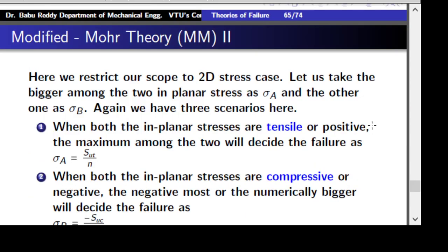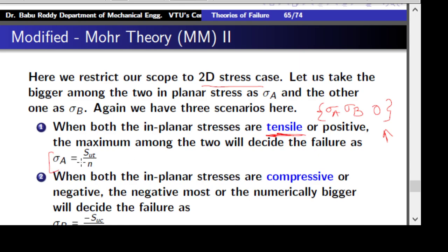In modified Mohr theory, we restrict our attention to the 2D stress case. When we find the principal stresses, let sigma_A and sigma_B be the two calculated stresses, and 0 is also present. Let sigma_A be the larger of the two. When both are tensile and sigma_A is the maximum, you can write sigma_A equals sigma_ut divided by n — which is nothing but the maximum normal stress theory equation.